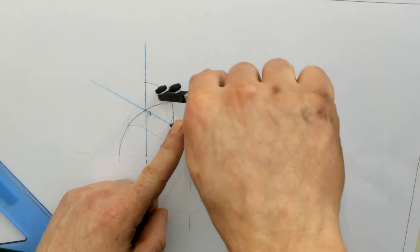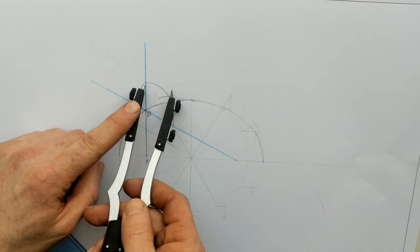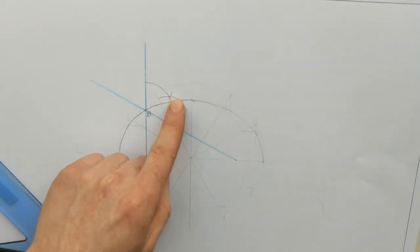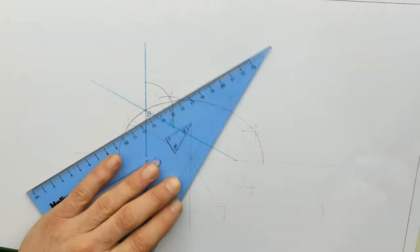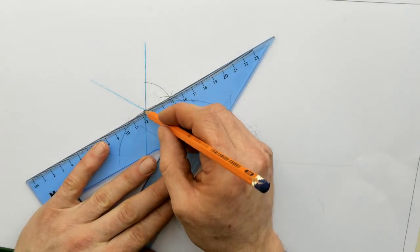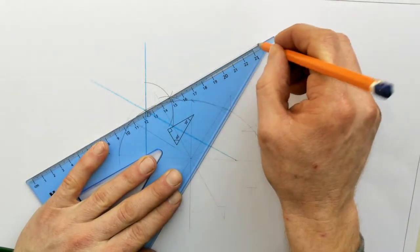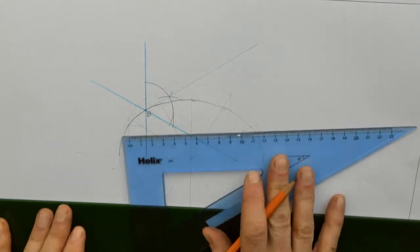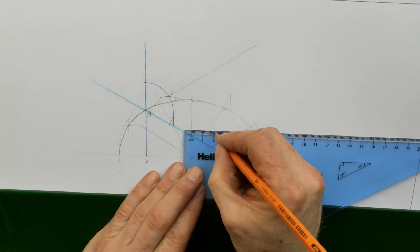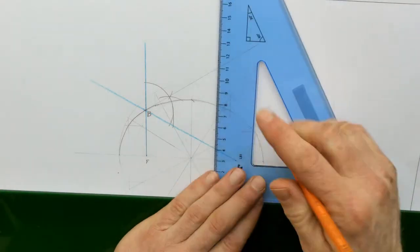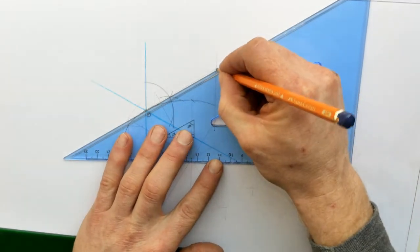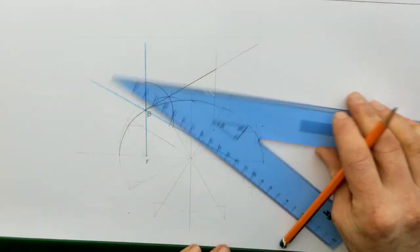To bisect this angle, you set your compass on the point B. Set it to anything. Swing an arc. Put your compass on this point. Swing an arc. Put your compass here. Swing an arc. Where they meet, we join this back to B. And just bring it on. So that is your tangent. Tangent goes 20 past the center line. So come over 20 past the center line. Bring this up.